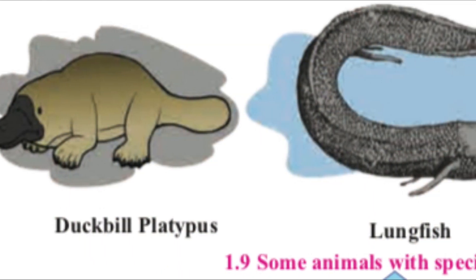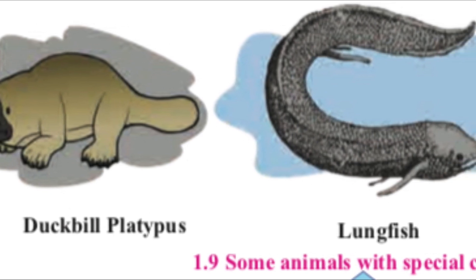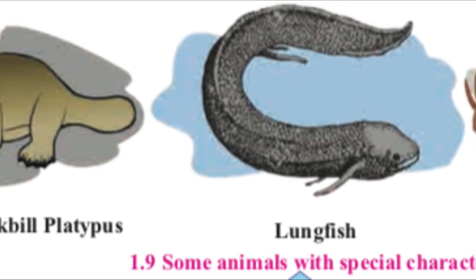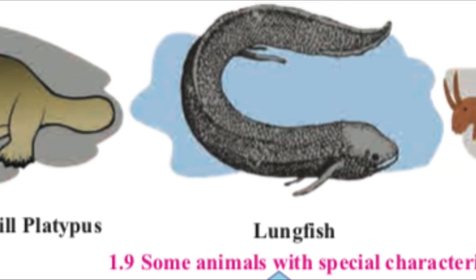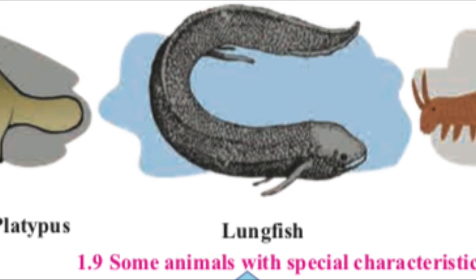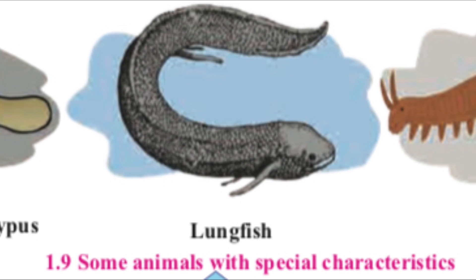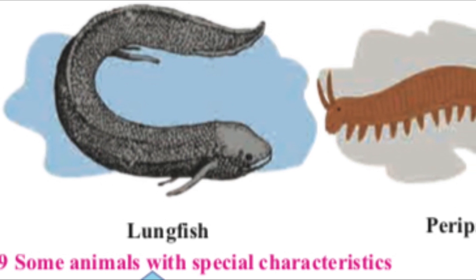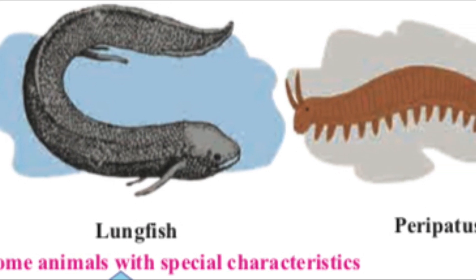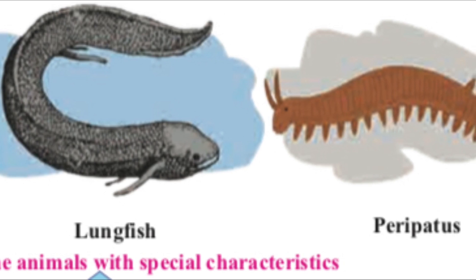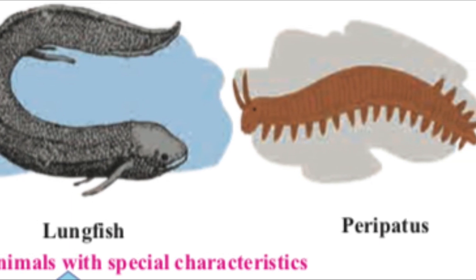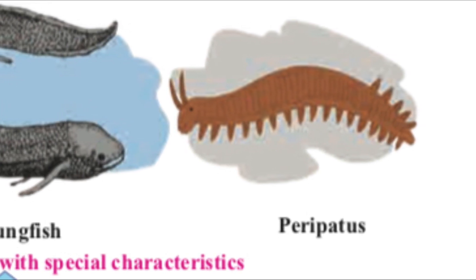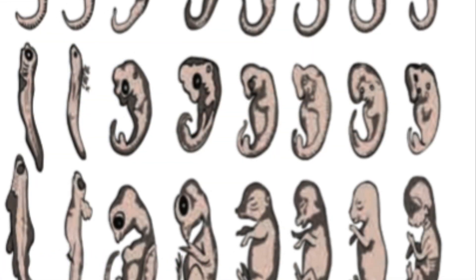Let's study about connecting links. Some plants and animals show morphological characters by which they can be related to two different groups, and hence they are called connecting links. Peripatus is a connecting link between Annelida and Arthropoda. The duck-billed platypus lays eggs like reptiles but also shows mammalian features like mammary glands and hair. Lungfish performs respiration with lungs despite being a fish. These examples indicate that mammals evolved from reptiles.